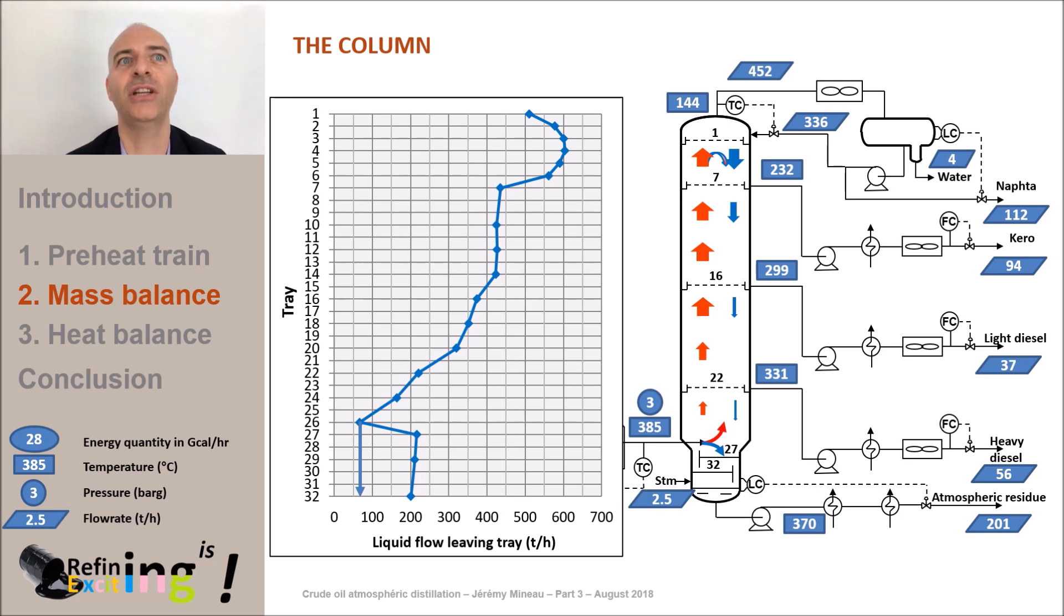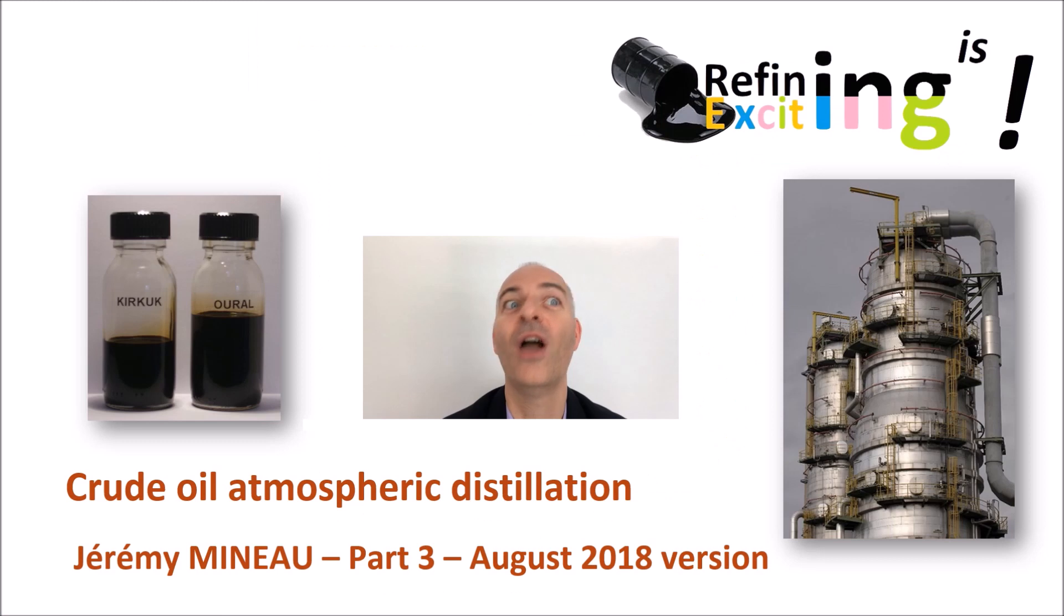Now that we have a distillation column that corresponds to the cut points we arbitrarily set, the question you may now ask yourself is, but is this really optimized? Can we better arbitrate the quantity of naphtha, kerosene, light diesel and heavy diesel? We will see that in the fourth video. See you soon and thank you for your attention.